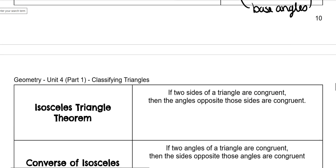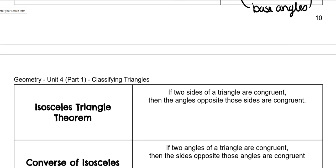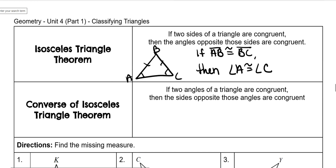So the isosceles triangle theorem says if two sides of a triangle are congruent, so if you know the sides are congruent, then you know the angles are congruent. So what I mean is whenever you have a triangle and you know that AB is congruent to BC, that's these tick marks that I drew, then you know the angles are also congruent at the bottom.